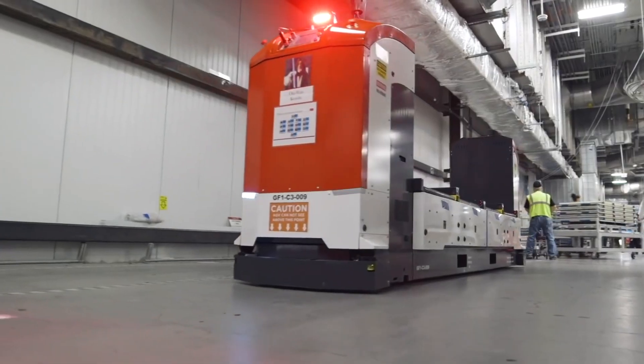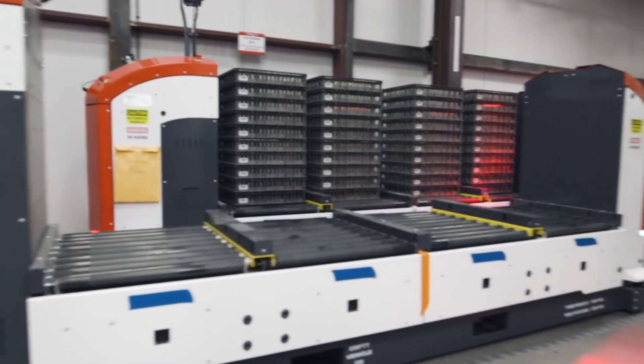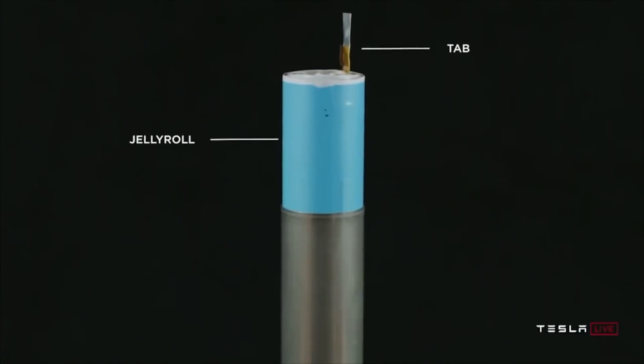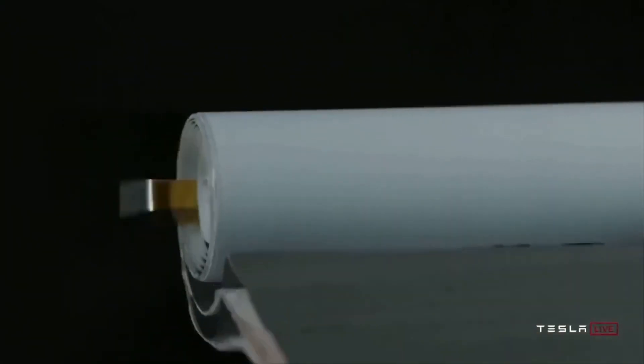For perspective, Giga Nevada is currently producing about 40 gigawatt-hours per year. Tesla's 4680 pilot line at Cato Road near the Fremont factory seems to be progressing rather well.